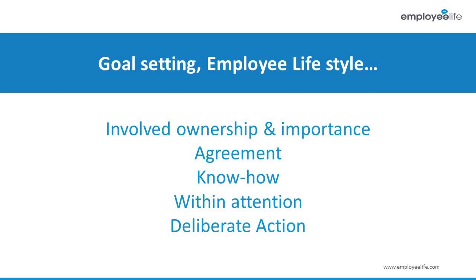Individuals need to be involved and need to agree to anything that they need to achieve. If a person can't make a conscious or unconscious link between the goal and what it means to achieve it, it probably won't happen. Also, a person needs to know how to actually go about achieving it — they have to have the capability and know-how, or at least have the ability to acquire that know-how. Goals then need to be kept within a person's attention. If someone forgets about it or it remains outside of their attention, it simply isn't going to get done.